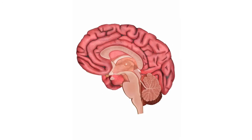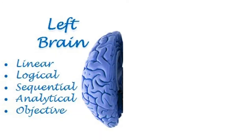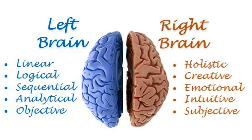Before we jump into the research, we need to learn a little bit about the background. The brain is composed of two cerebral hemispheres: the left hemisphere and the right hemisphere. The left side of the brain is responsible for logic, language, and reasoning. The right side of the brain is responsible for creativity, imagination, and intuition.